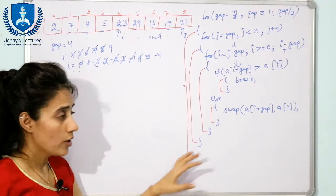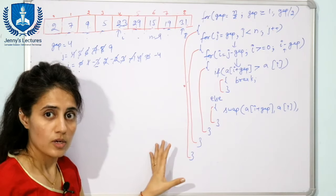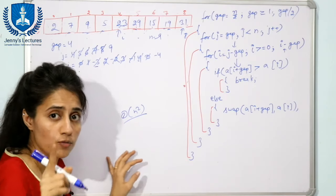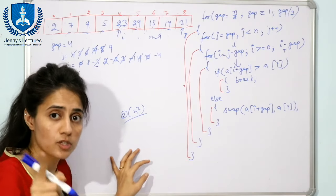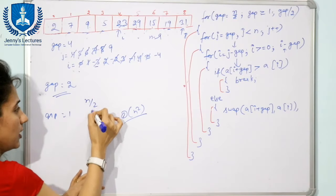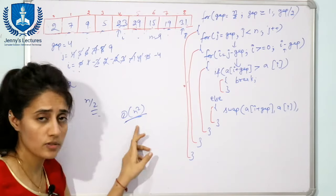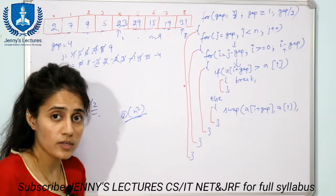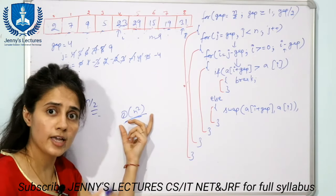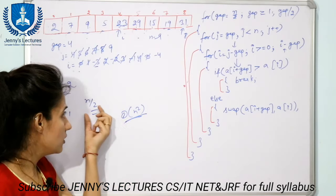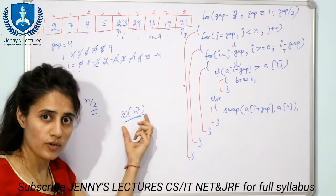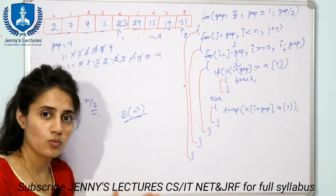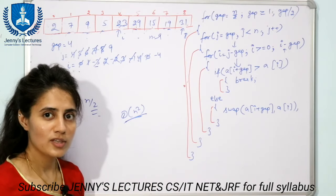The time complexity of shell sort in the worst case, when using the n/2 gap sequence, is O(n²). However, time complexity depends on the gap sequence chosen — a better gap sequence can yield better time complexity. So in shell sort, efficiency is closely tied to the gap sequence used.